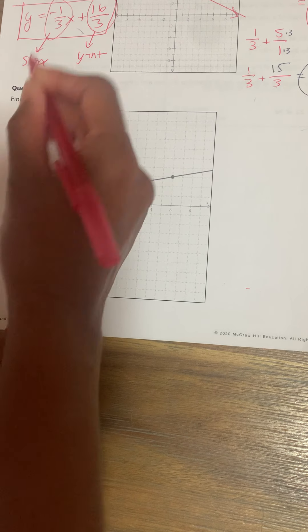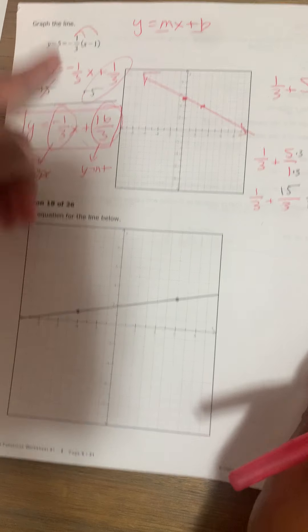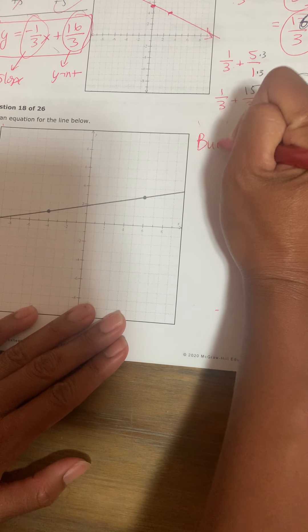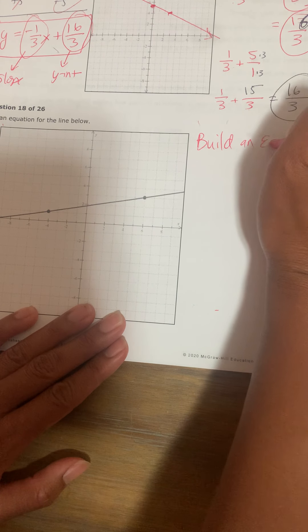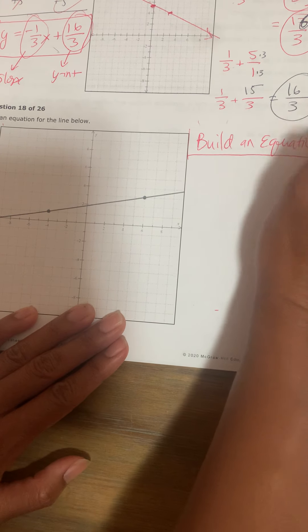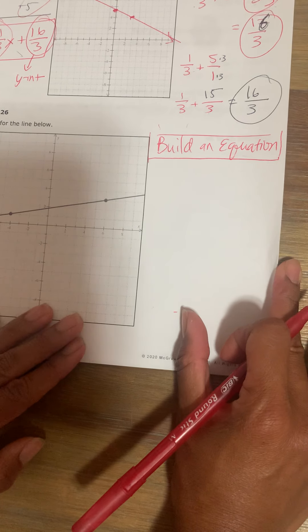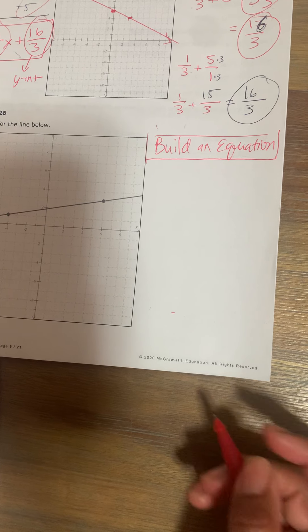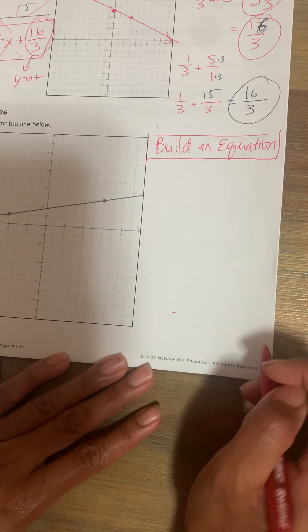So now instead of graphing an equation, graphing a line based on a given equation, you're going to go reverse. So what I call this is building an equation. If you think of Disneyland where they have Build-A-Bear, when you do a Build-A-Bear you get parts of the bears together and then you put it together. Building equations, similar idea.